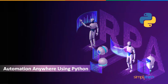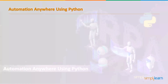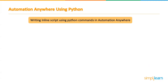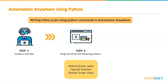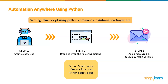Automation Anywhere is one of the leading robotic process automation platforms, built on the world's most commonly used automation and artificial intelligence platform. In Automation Anywhere using Python, we will write inline scripts using the Python Script command and its machine learning capabilities. We will first login to the control room, create a new bot, then drag and drop actions from the Python Script package: Python Script Open, Execute Function, and Python Script Close. Then we will add a message box to display the result variable.